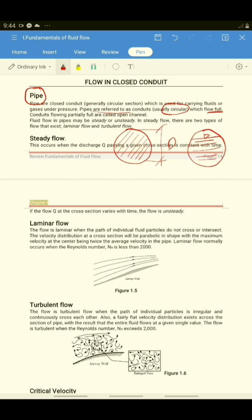So the fluid flow in pipes may be either steady or unsteady. In steady flow, there are two types of flow that exist. You have laminar flow and turbulent flow. In between of laminar flow and turbulent flow, there is a critical flow, of course.